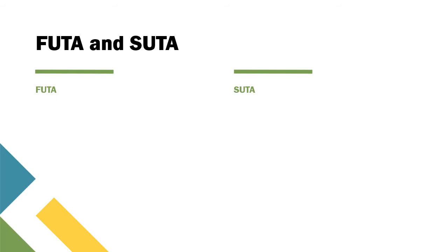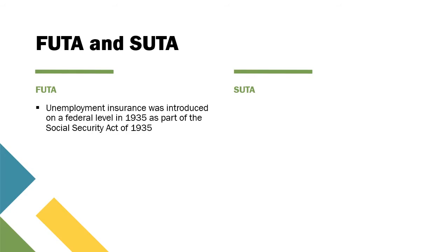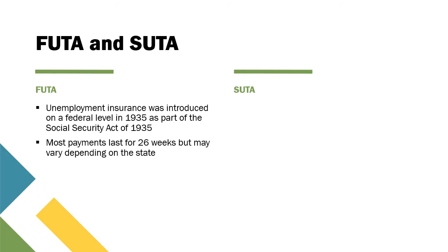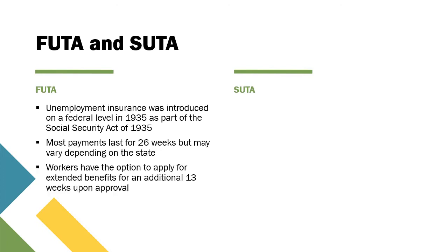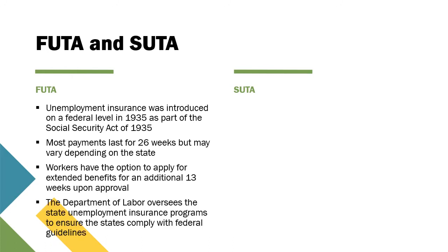FUTA is unemployment insurance that was introduced on a federal level in 1935 as part of the Social Security Act of 1935. Most payments last for 26 weeks but may vary depending on the state. Workers have the option to apply for extended benefits for an additional 13 weeks upon approval, and the Department of Labor oversees the state unemployment insurance programs to ensure states comply with federal guidelines.